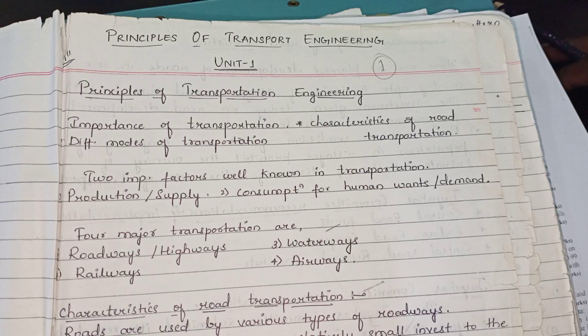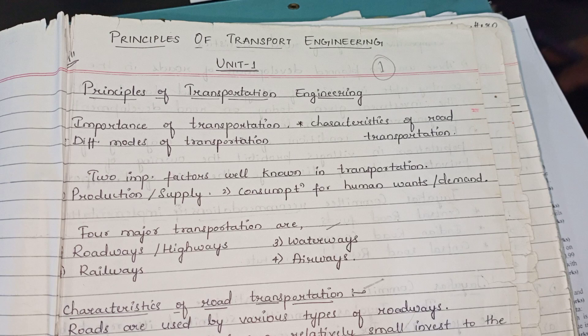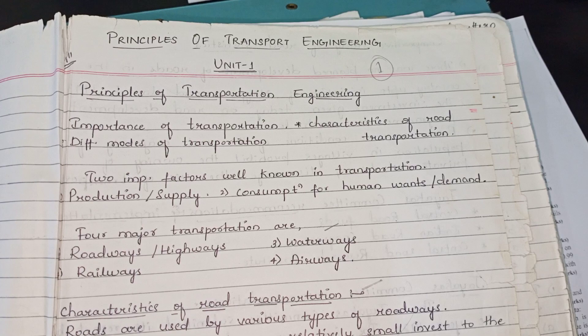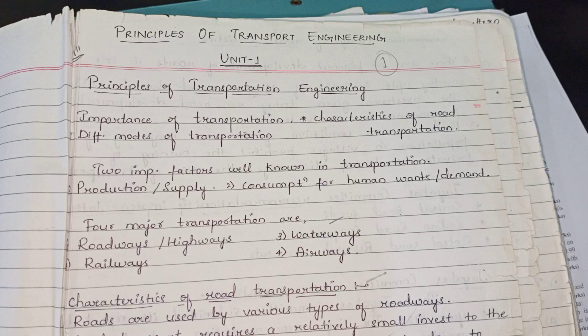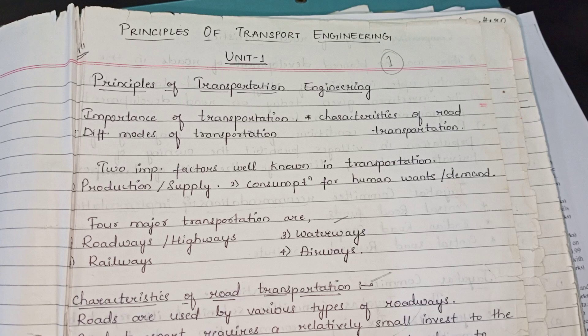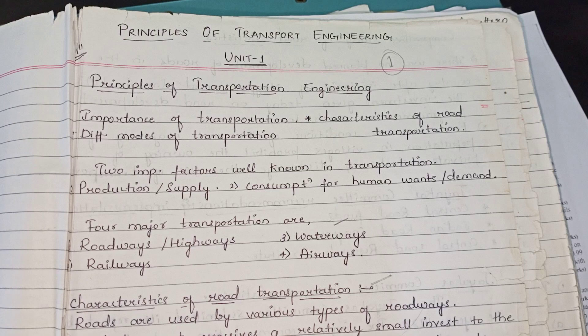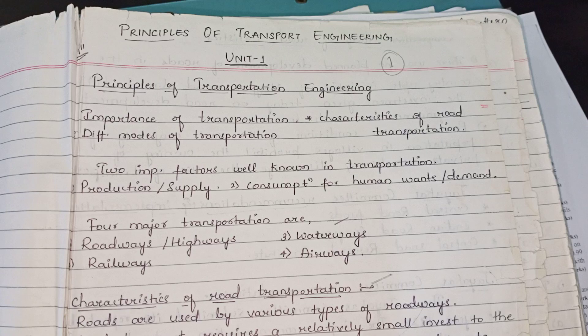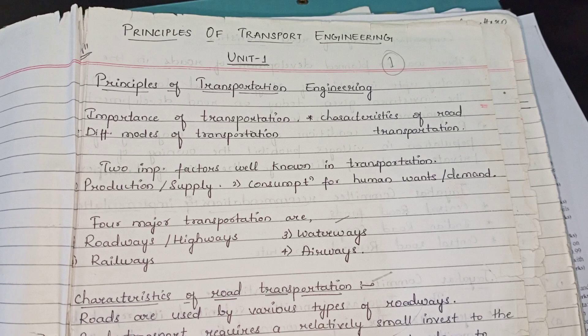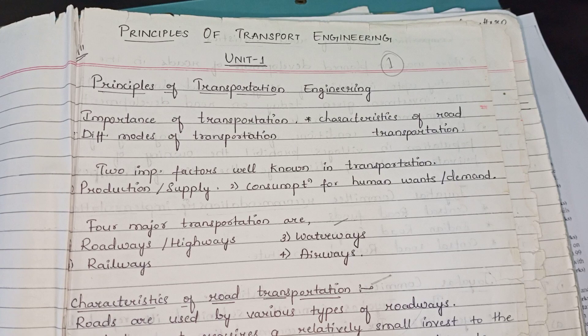This is Model 1 on Principles of Transportation Engineering. Topics covered include the importance of transportation, different modes of transportation, comparison characteristics of road transport, JICAR committee recommendations and implementations, Central Road Fund, Indian Road Congress, Central Road Research Institute, highway development and planning, road types and classification, road pattern planning, survey, master planning, saturation system, and road development in India.